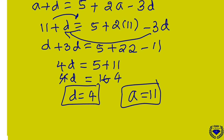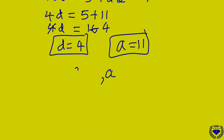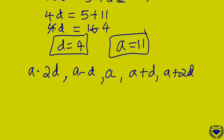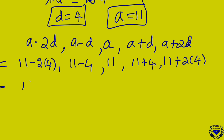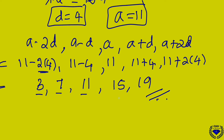Now with A = 11 and D = 4, we find all 5 terms: A minus 2D = 11 minus 8 = 3; A minus D = 7; A = 11; A plus D = 15; A plus 2D = 19. So the 5 terms of the AP are 3, 7, 11, 15, 19.